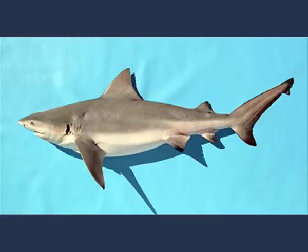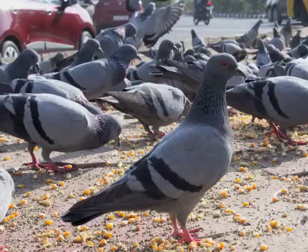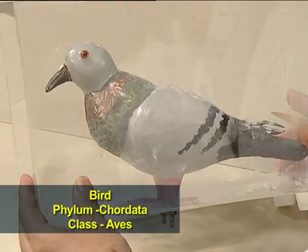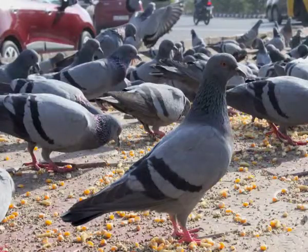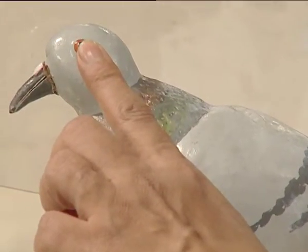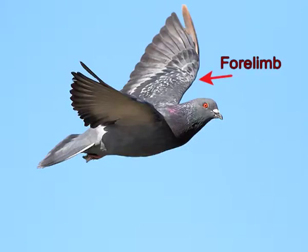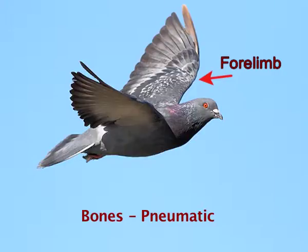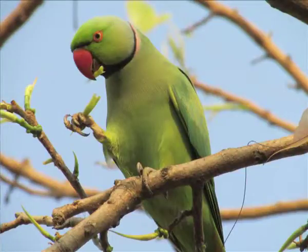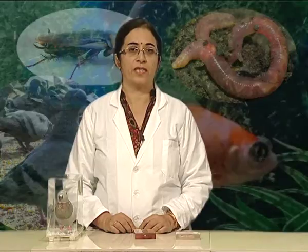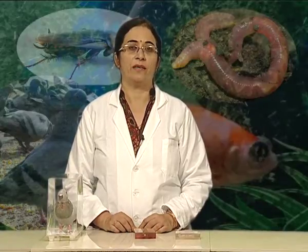The fourth example is bird, which belongs to phylum Chordata and class Aves. The jaws are modified into a beak. The shape of the body is boat-shaped. Four limbs are modified into wings. Bones are pneumatic, meaning they have air spaces that make the body lighter for flight. Other examples of birds are peacock and parrot. They are important for dispersal of seeds and form a major link in the food cycle.